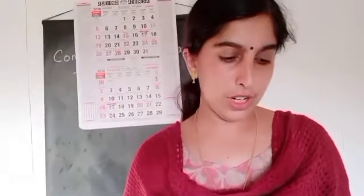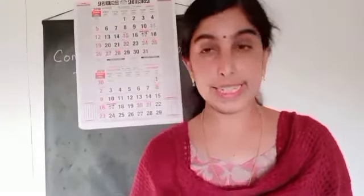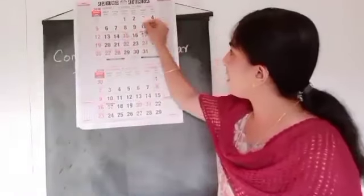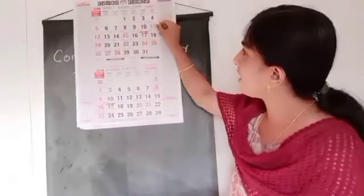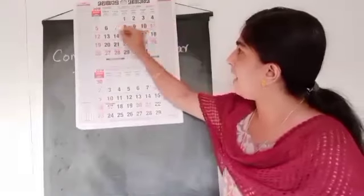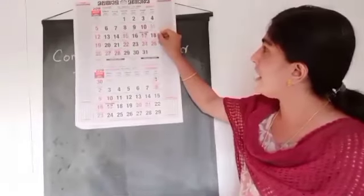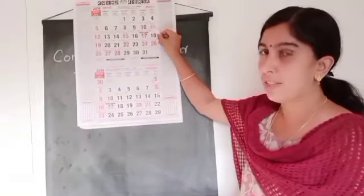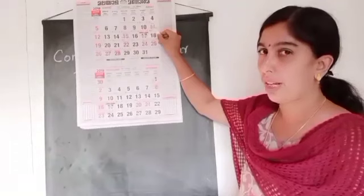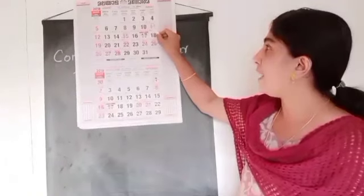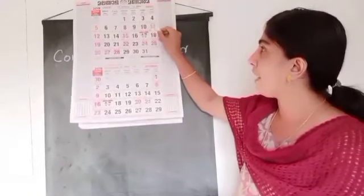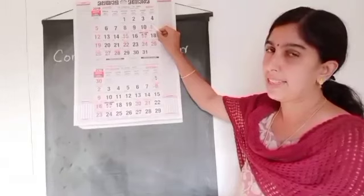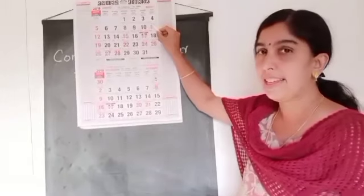Then the next question: what is the date on the 2nd Saturday? You can see 4th is the 1st Saturday and the next Saturday is 11th. That is also a holiday, so 11th is also in red color. The 2nd Saturday is 11th.